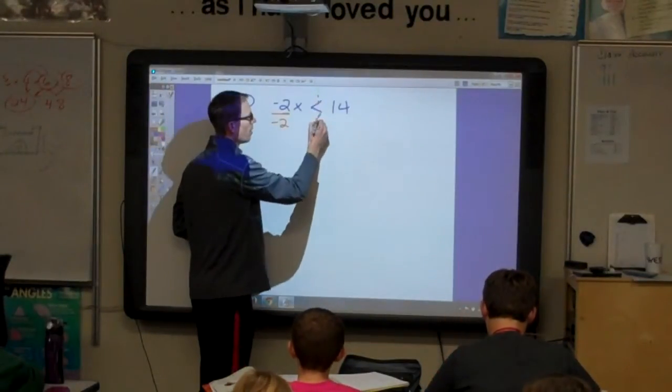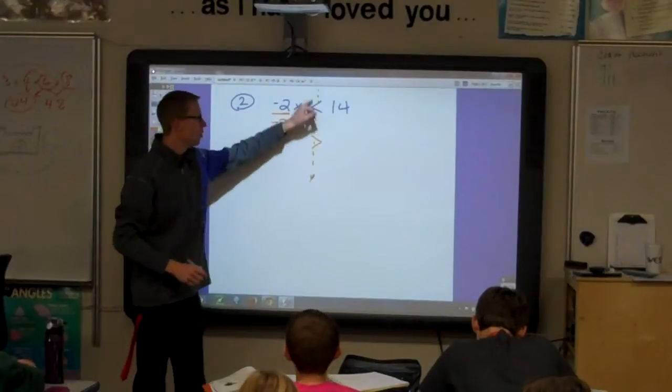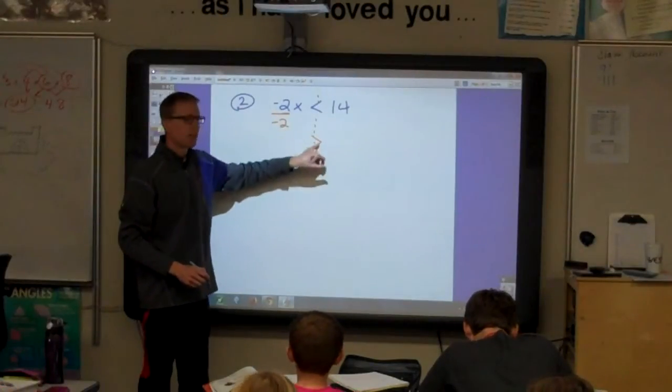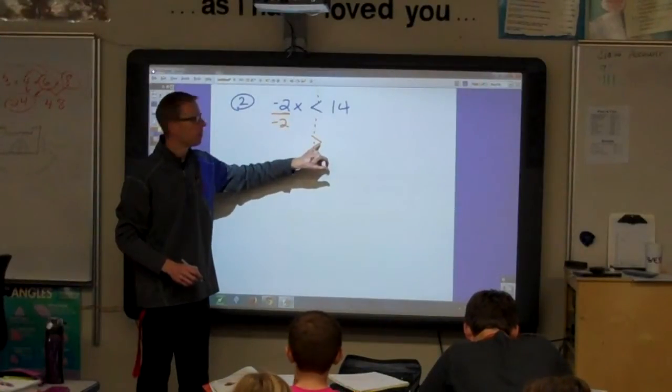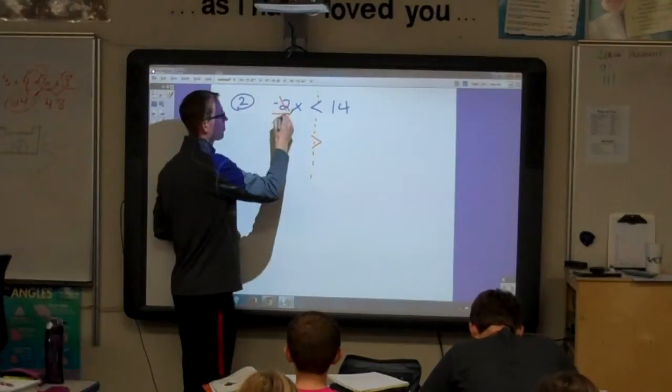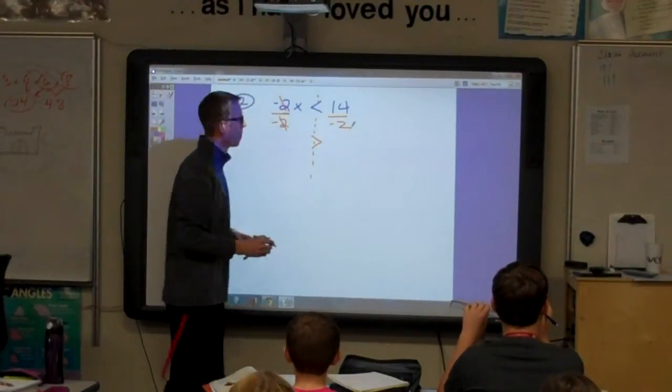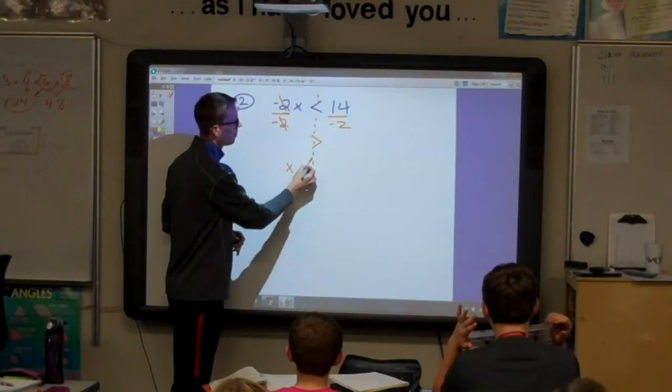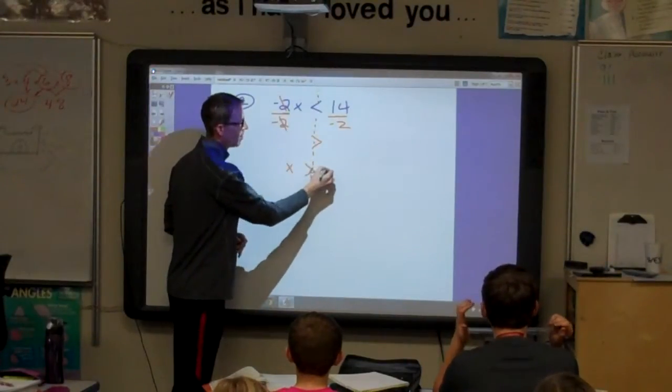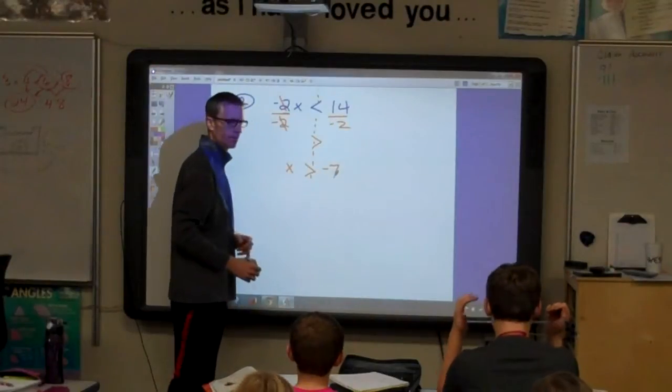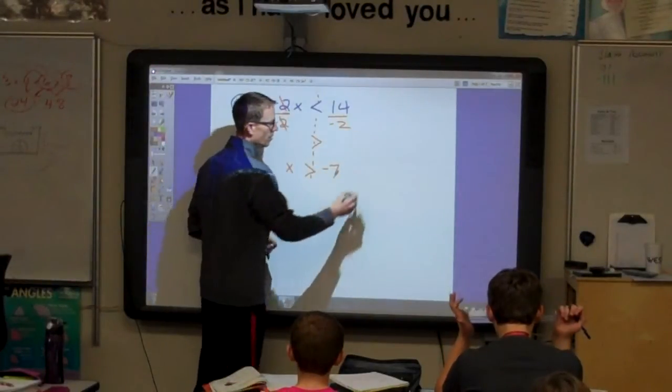So, when you start, if you want to draw this line, you could draw the line, reverse the sign right away, and then solve it. Divide both sides by negative 2. So, x is greater than negative 7.